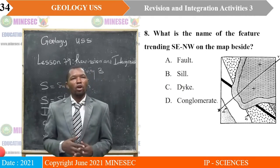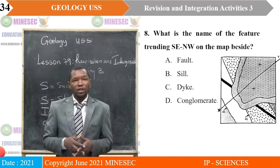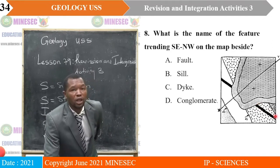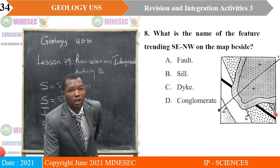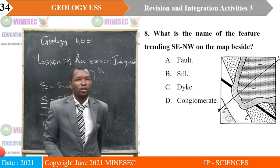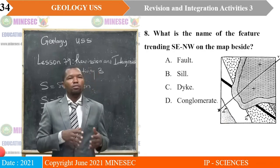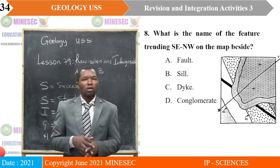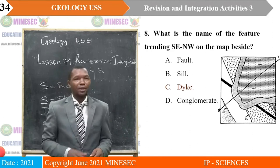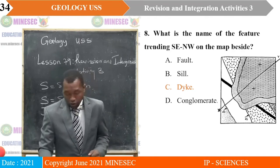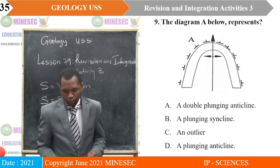Question eight: What is the name of the feature trending south-east to north-west on the map? This structure is trending south-east to north-west and is cutting across beds. The options are A — fault; B — sill; C — dike; D — conglomerate. The correct answer is C, dike — it is a linear structure cutting across other beds.